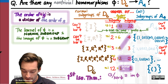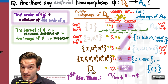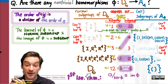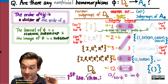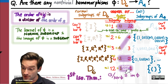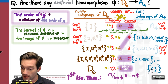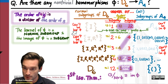If the kernel were all of D6, every element from the domain would be sent to the identity in the target group, making the homomorphism trivial. The image subgroup would also be trivial. That's the trivial case, but we're looking for non-trivial homomorphisms, so let's keep looking.